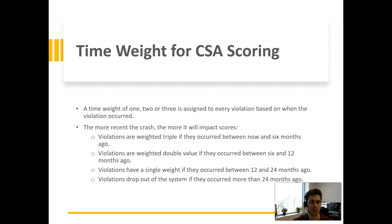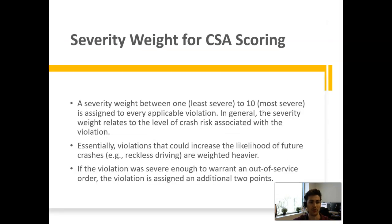A time weight of 1, 2, or 3 is assigned to every violation based on when the violation occurred — the more recent the crash, the more it will impact scores. Violations are weighted triple if they occurred between now and 6 months ago, double if they occurred between 6 and 12 months, and a single weight between 12 and 24 months ago. After 24 months, they drop out of the system. A severity weight between 1 (least severe) and 10 (most severe) is assigned to every applicable violation, and generally relates to the level of crash risk associated with the violation — violations that could increase the likelihood of future crashes are weighted heavier, such as reckless driving or being on your phone.